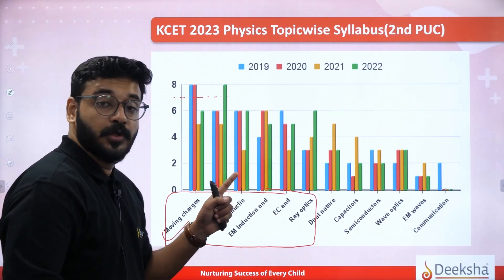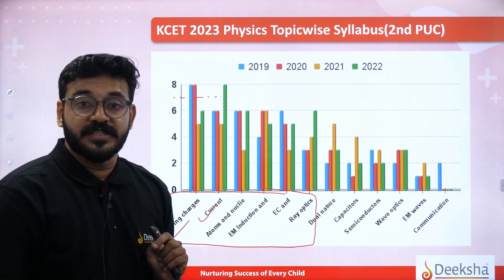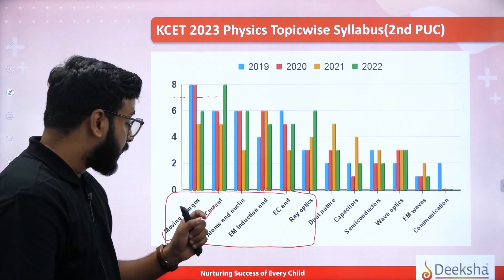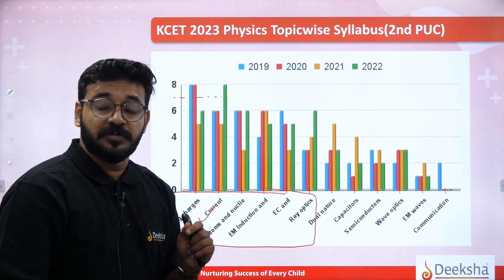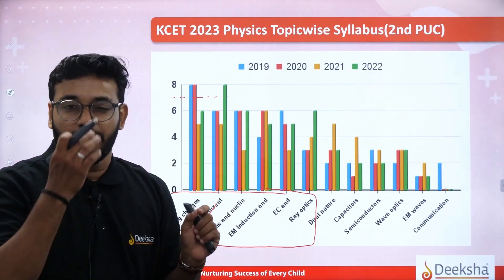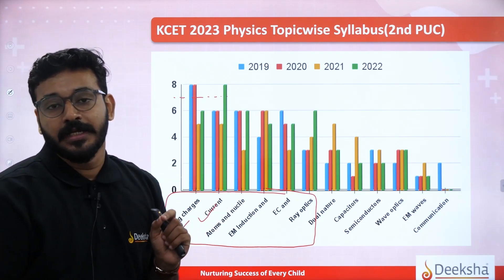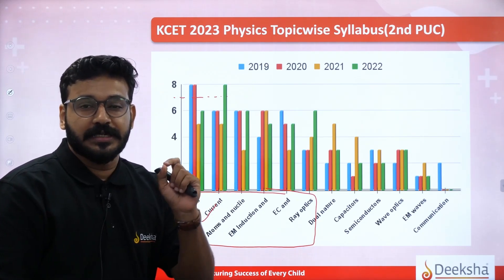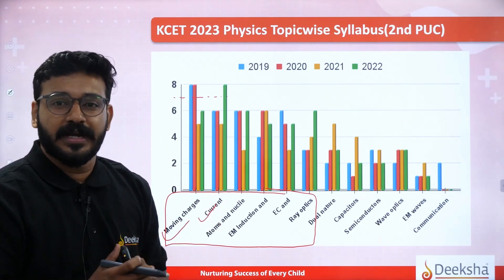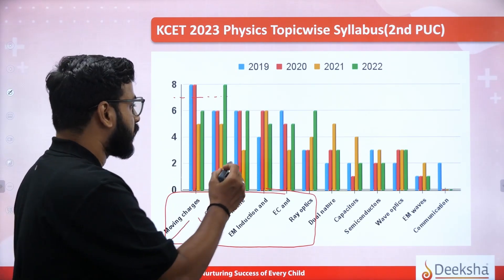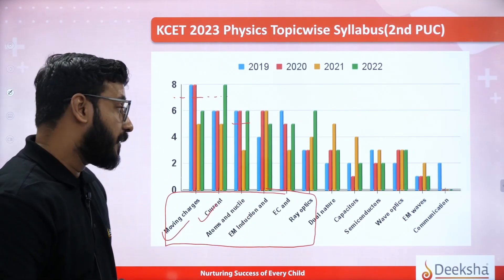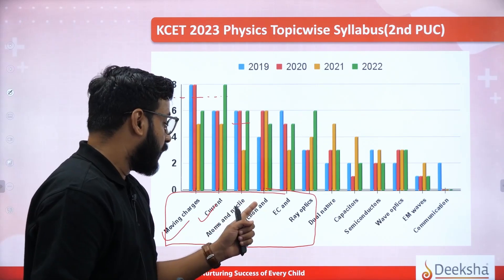Atoms and nuclei — modern physics is very important, both in the first and second parts of the textbook. Atoms and nuclei are a consistent trend. Energy levels, spectral radiation, atomic spectra, hydrogen spectra — they are all very important. The average is 5 to 6 questions per year. Every year, that chapter is important.